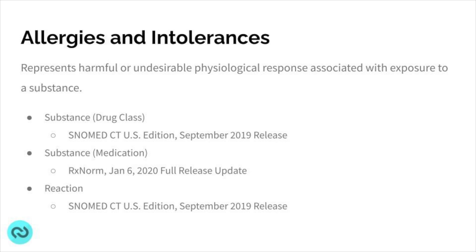Let's take a look at what the USCDI actually lays out. I'm going to go through a couple of examples — not all 16 — and I'll put the link to the USCDI website below so you can dive further into any of them. For allergies and intolerances, which represent harmful or undesirable physiological responses associated with exposure to a particular substance, the USCDI version one data elements are substance for drug class, substance for medication, and the reaction. For the drug class, interoperability standards need to follow the SNOMED CT US edition September 2019 release. For the substance medication data element, it needs to be RxNORM, the January 6, 2020 full release update.